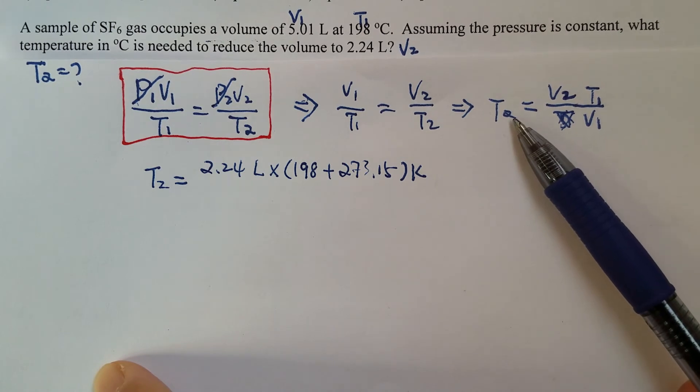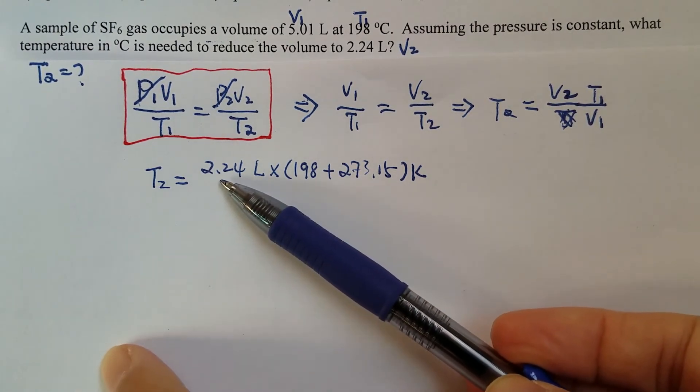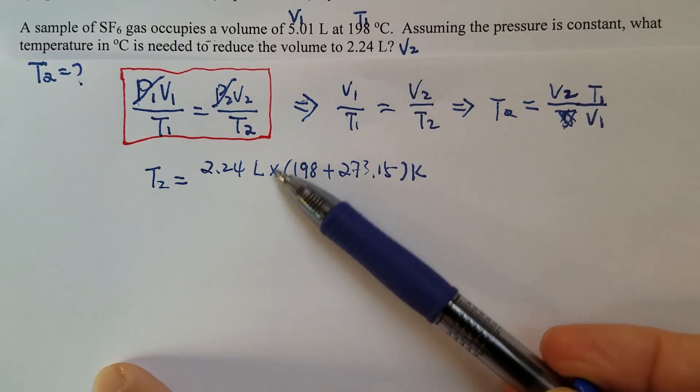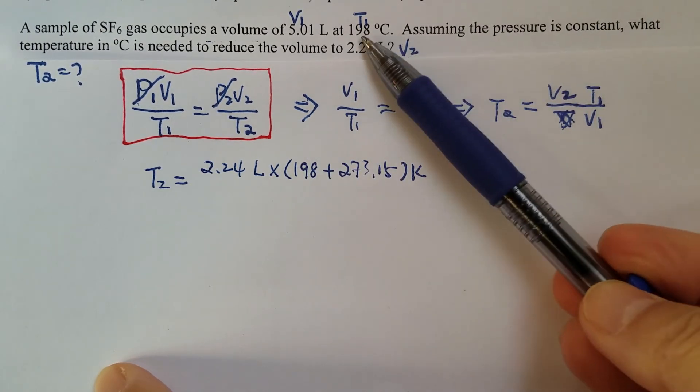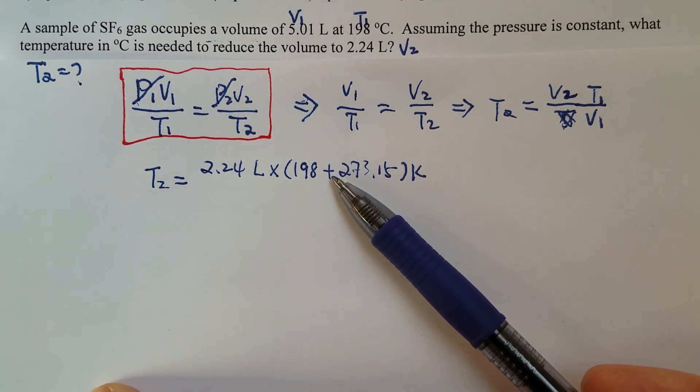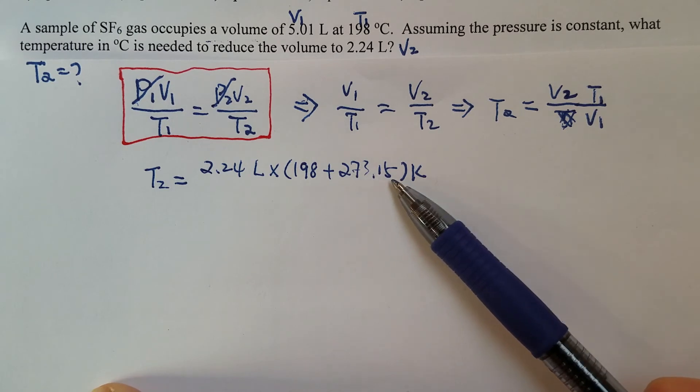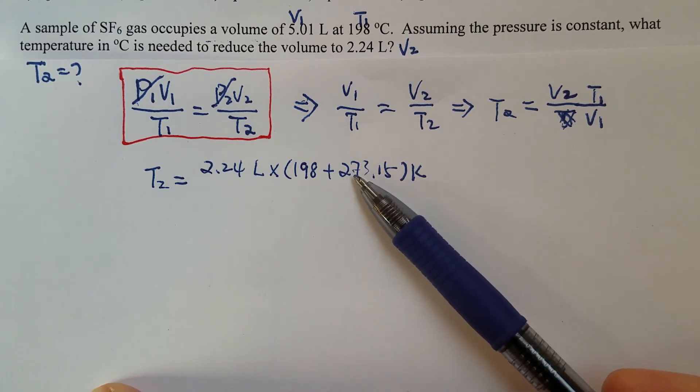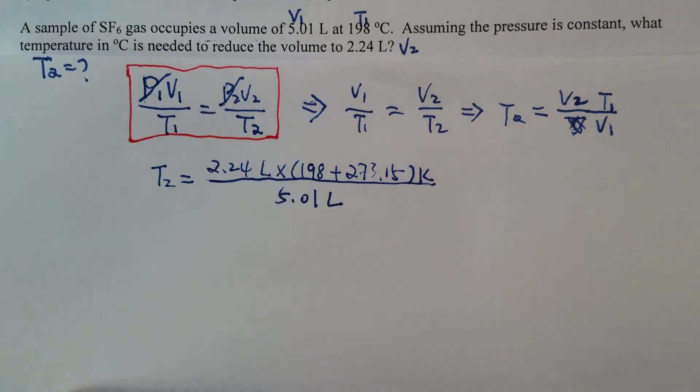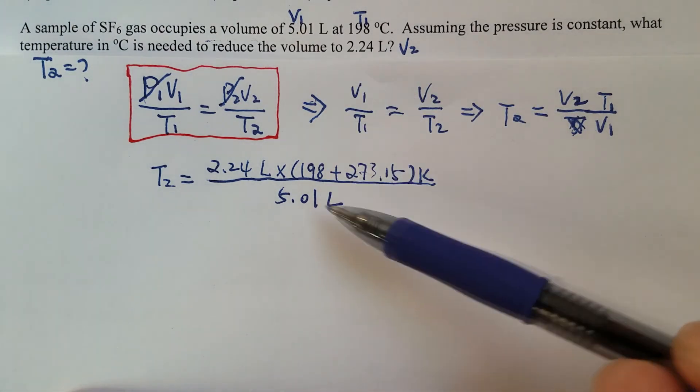So T2 equals V2, 2.24, that's V2, times T1. T1 is 198 degrees Celsius. Again, we have to always convert that into Kelvin scale. So then plus 273.15 divided by V1, which is 5.01 liters.